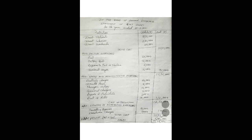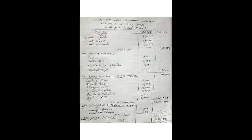The question states a profit margin of 50 percent on cost. Calculate 50 percent of the total cost — that gives rupees 6,35,000. Add the profit to the total cost and you get total sales. The final answer for total sales is rupees 19,05,000.